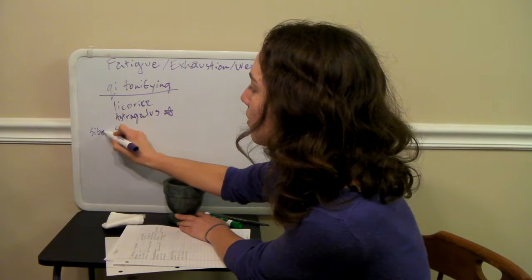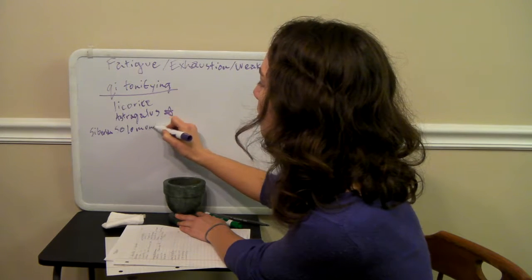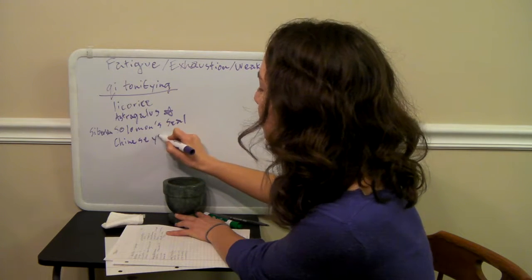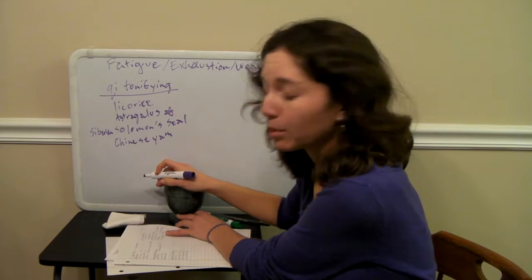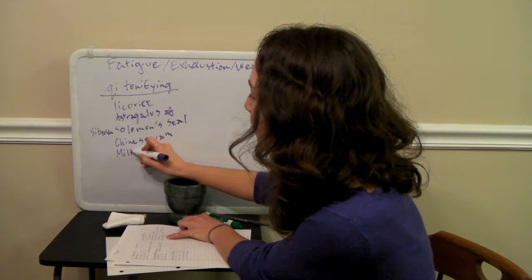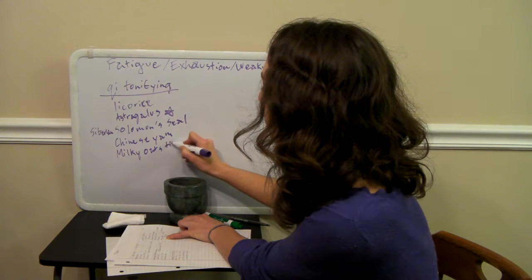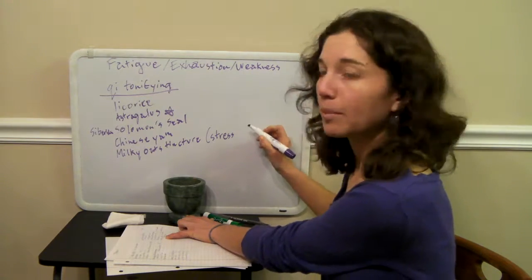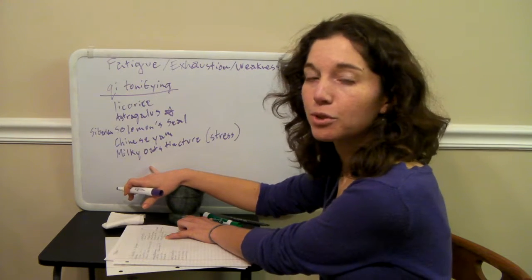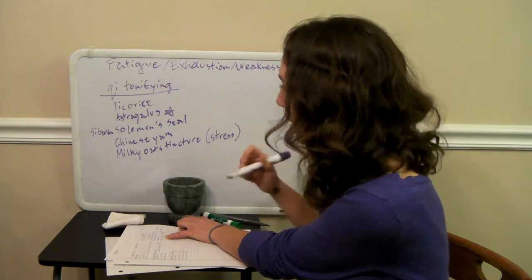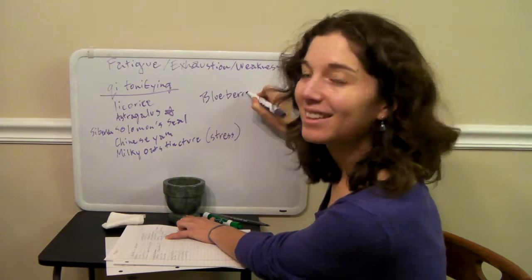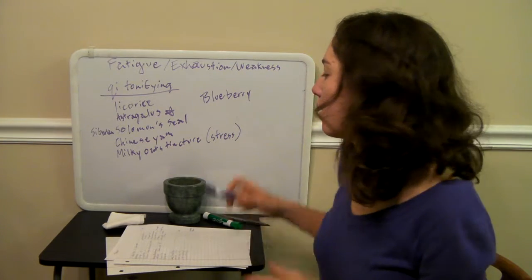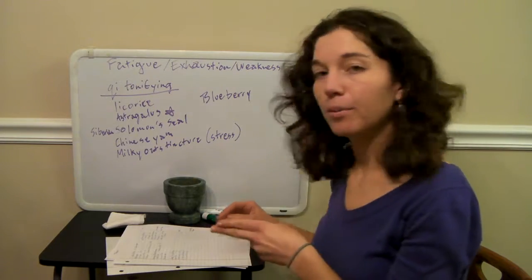And Solomon's seal is a good one as well. You want the Siberian. You can also use Chinese yam, which is a Dioscorea. These are usually things that you can find at a local supplement store. They aren't too hard. Milky oats tincture is also a nice one. This is a good one to look for in the stress section of your supplement store. Because a lot of times this is used for stress or anxiety. You can find it there. And then also if you want to eat some blueberries, they are also really nice at tonifying qi. So you can include maybe one or two of these in your formula, along with the cooling and moistening herbs and then the moistening category.